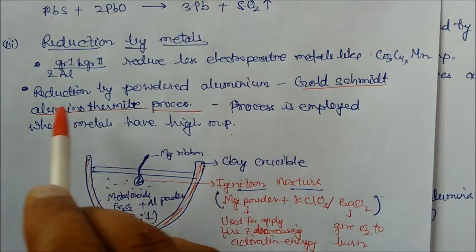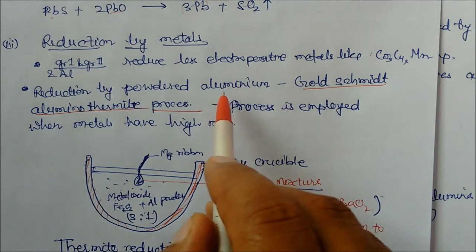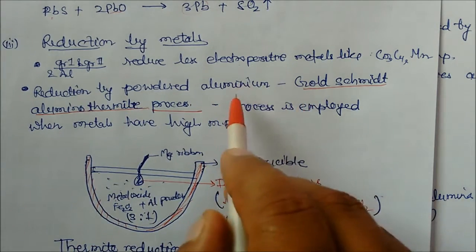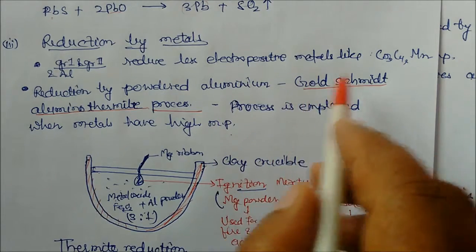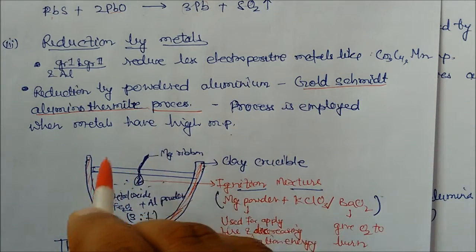Here, if you are using aluminium as a reducing agent, then this process is a special process. It is called as Gold-Schmidt aluminothermic process.